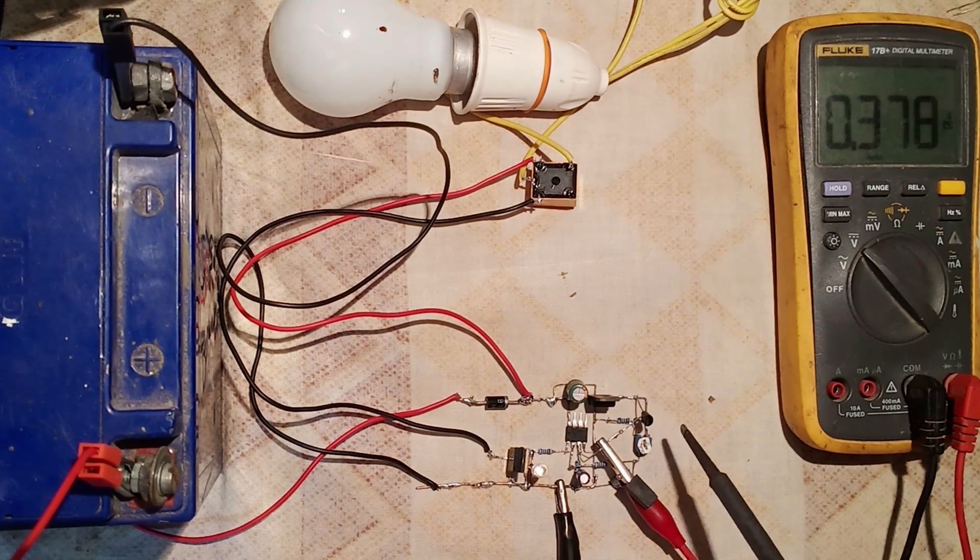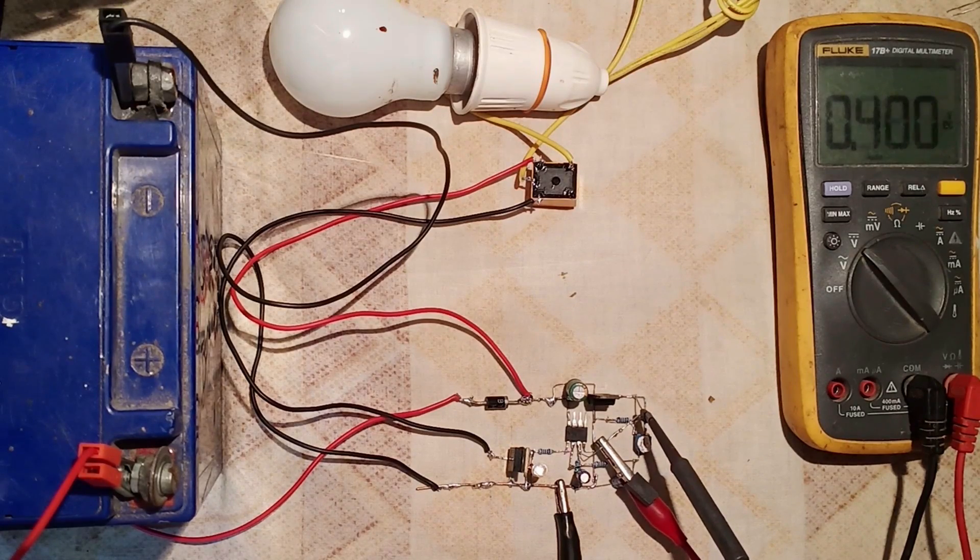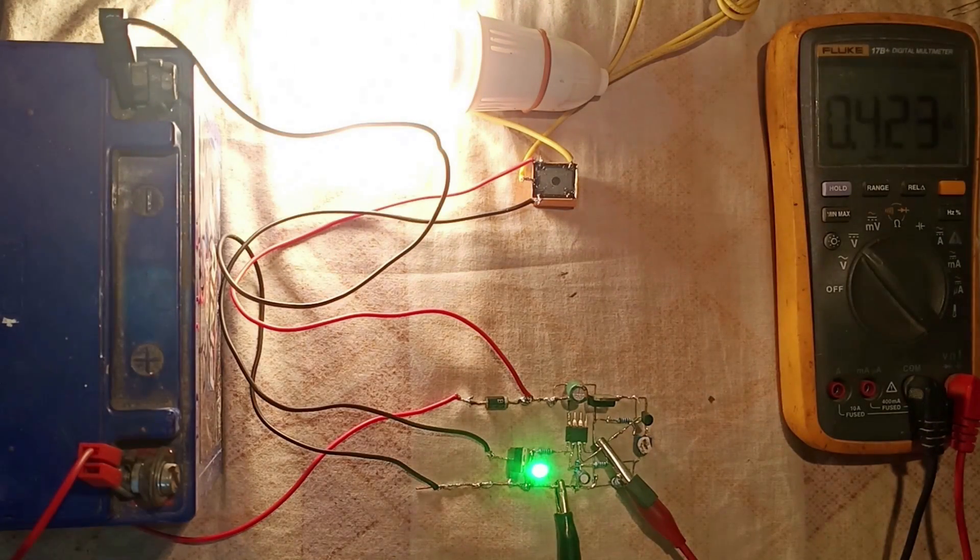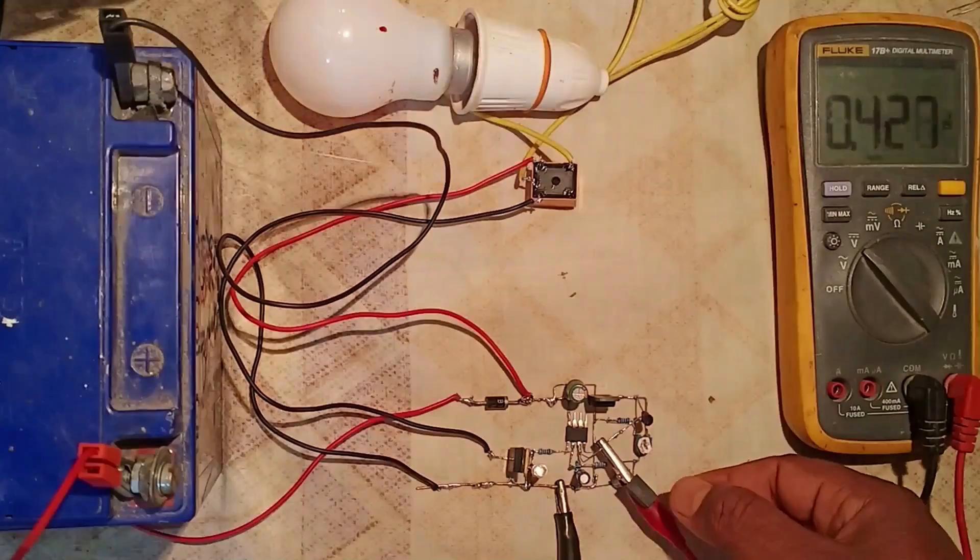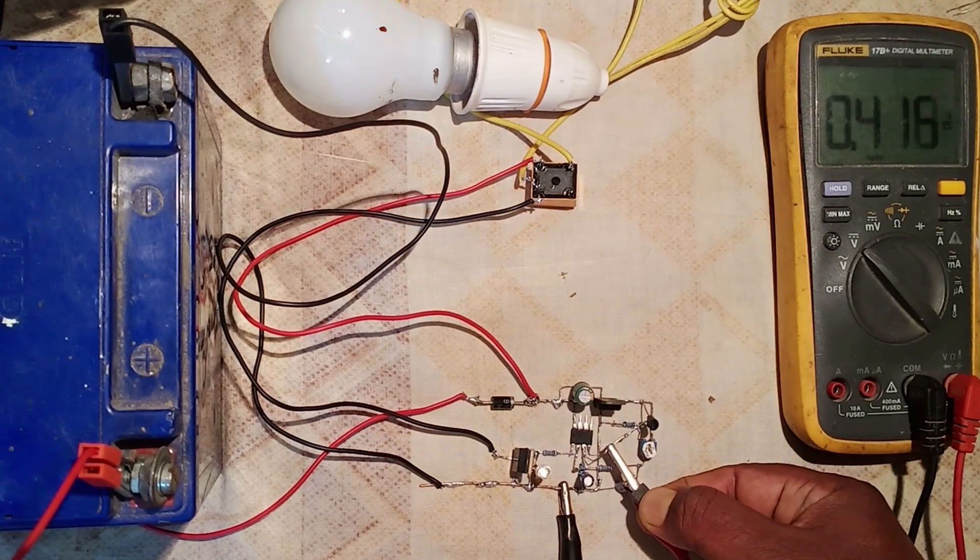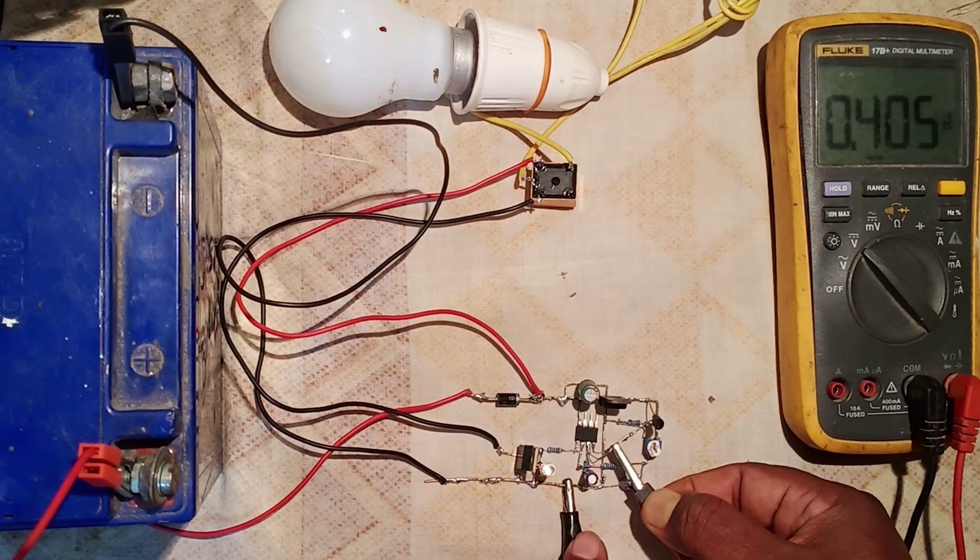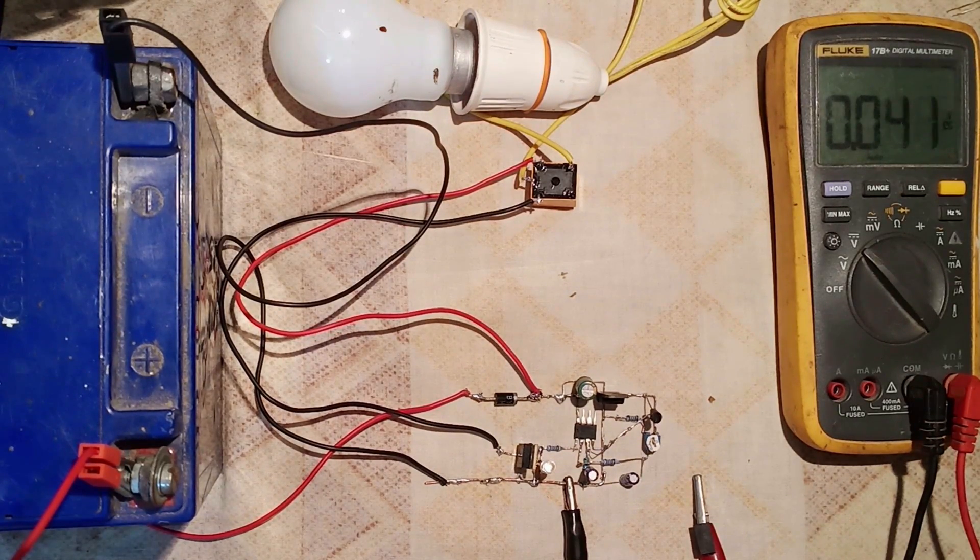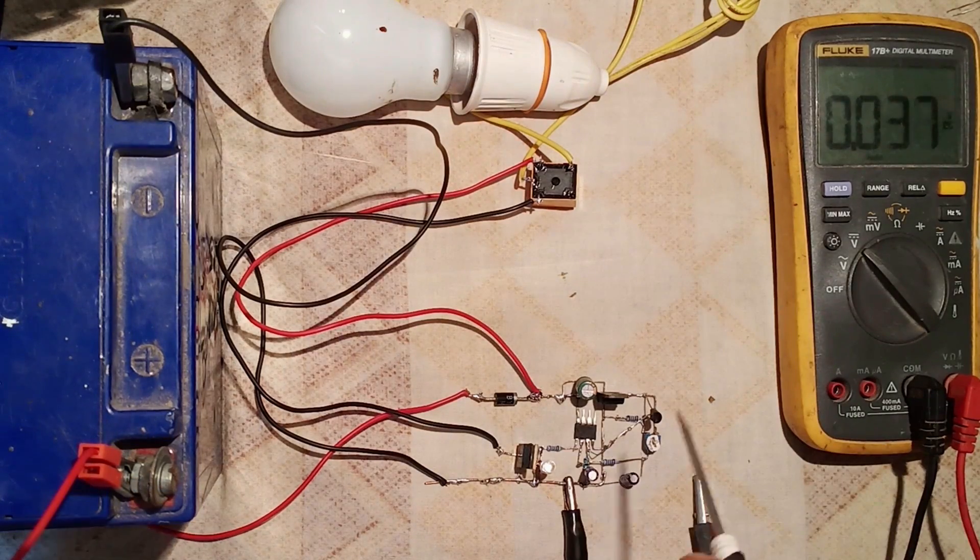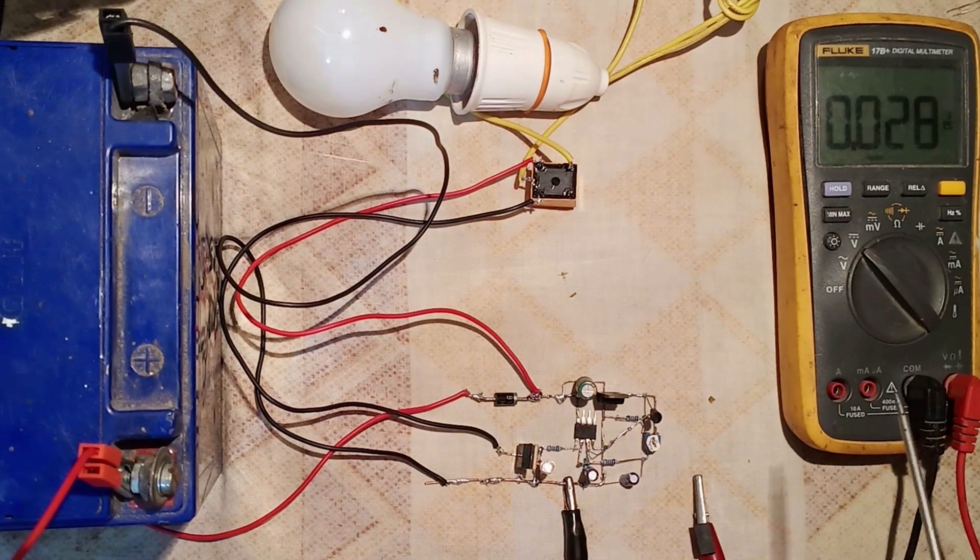The circuit presented here is a low-cost op-amp based temperature controller that can read and control temperature up to 150 degrees centigrade. The schematic, component layout, and working of the circuit is shown at the end of the video.